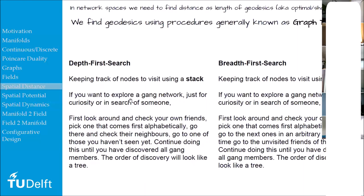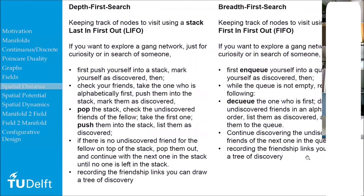If you want to explore a gang network using the depth-first search approach, you first check your own friends, then go check their neighbors, and go as deep as you can go into the network — starting from yourself. That would be depth-first search. The other approach would be to search among your closest circle of friends, then the friends of your friends, the friends of friends of friends, and so on — that's breadth-first search.